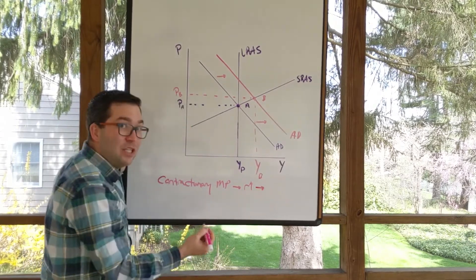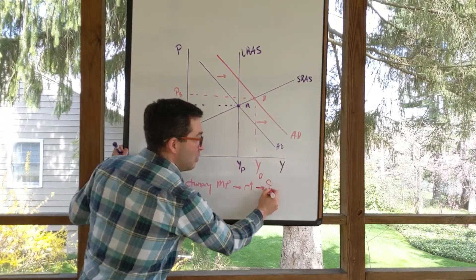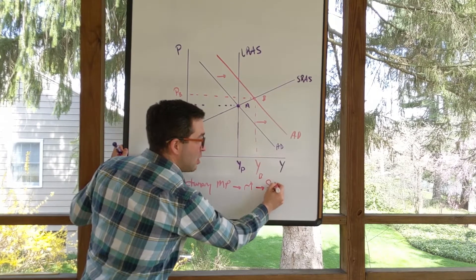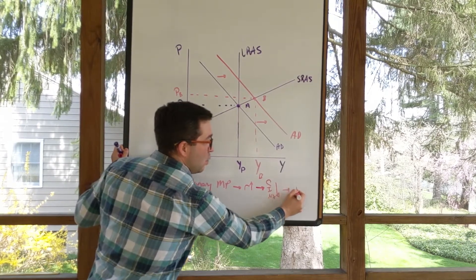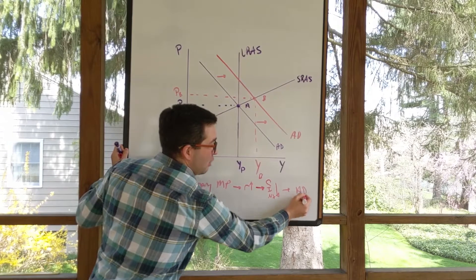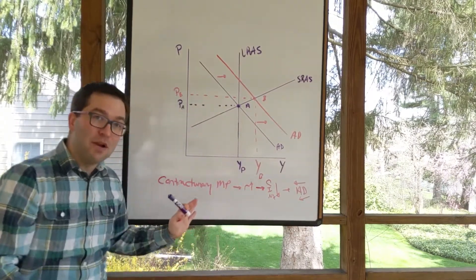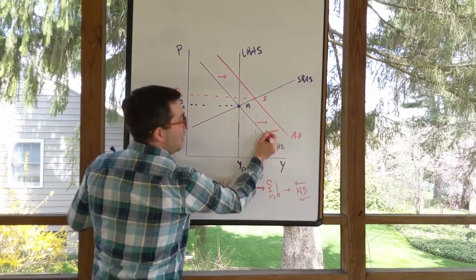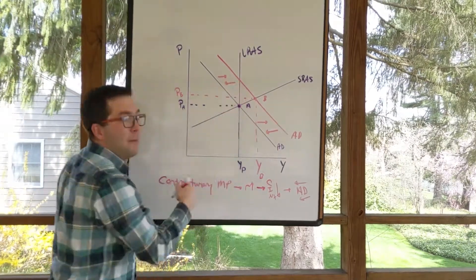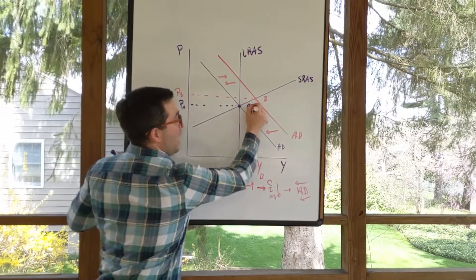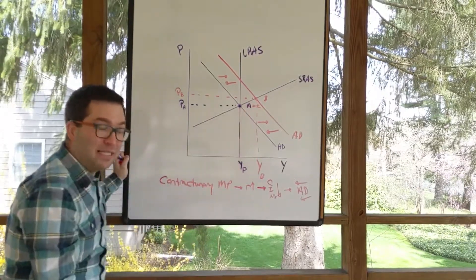Recall that raising interest rates will make consumption, investment, and then exports all decline, which makes my aggregate demand curve come back to the left. So just like with a recessionary period, we're going to see the aggregate demand curve come back, and we'll see point A equaling to point C.